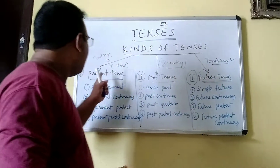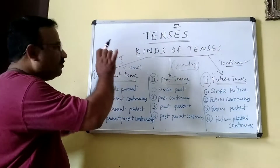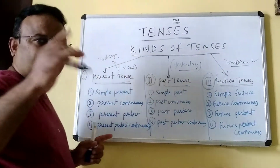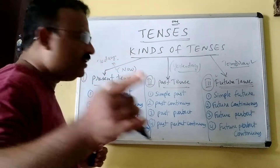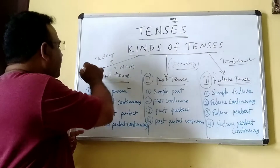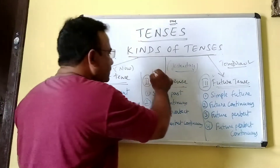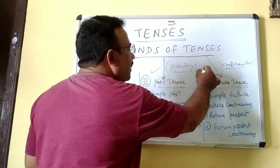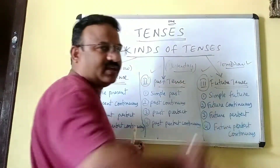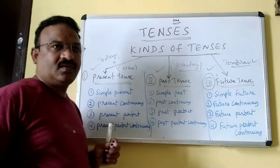So, there are mainly three kinds of tenses. Just repeating: present tense, past tense, and future tense.